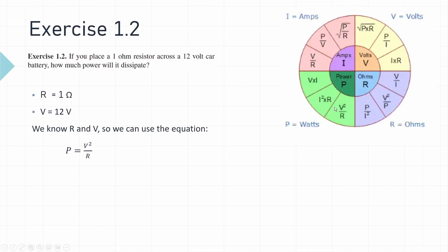We need to find out what 12 squared is, which is equal to 144. 144 divided by one is equal to 144.